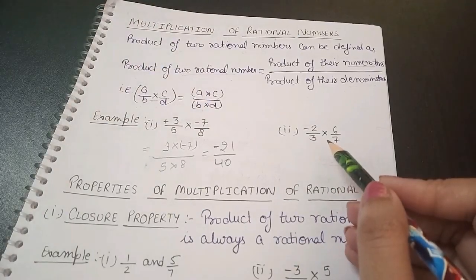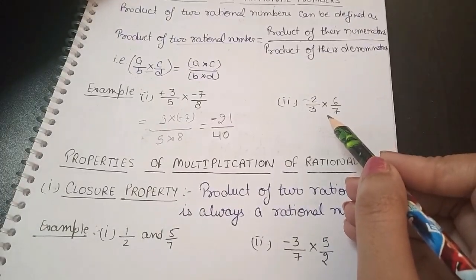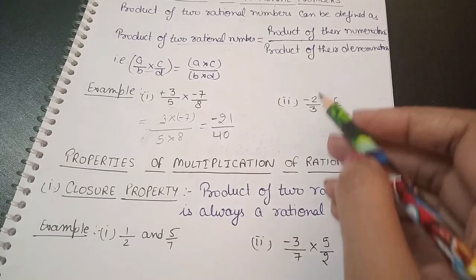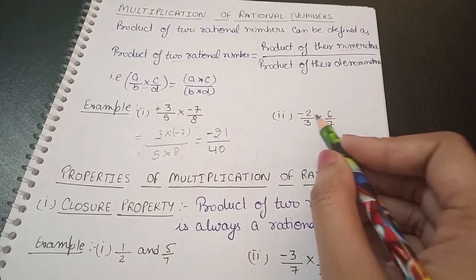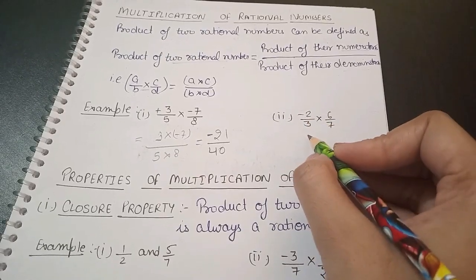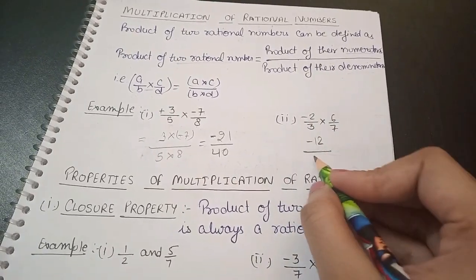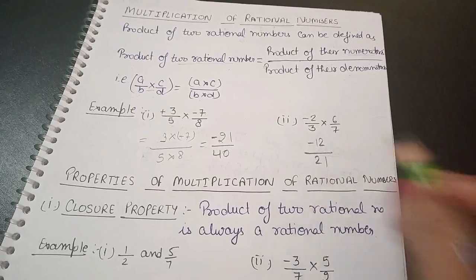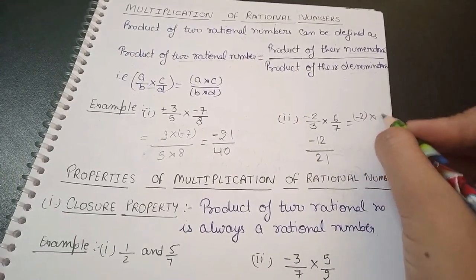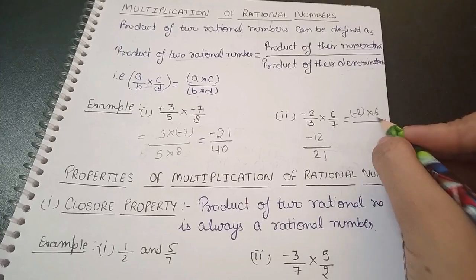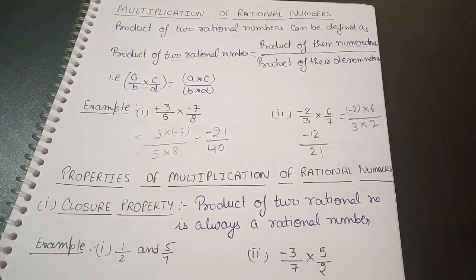Let's try one more example. We multiply -2/3 and 6/7. Multiplying numerators: -2 × 6 = -12. Multiplying denominators: 3 × 7 = 21. So the answer is -12/21.